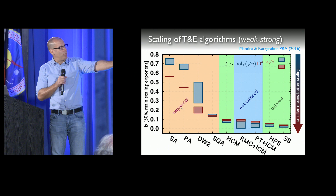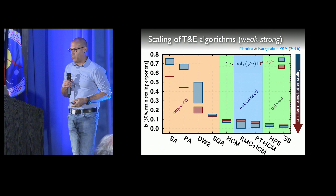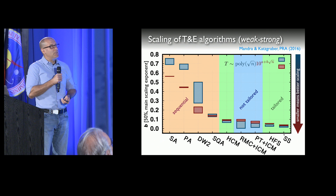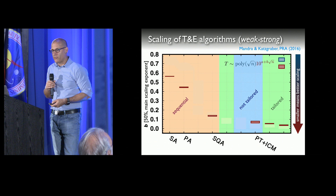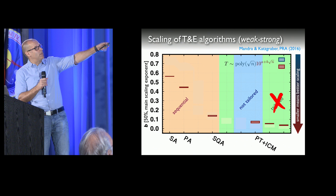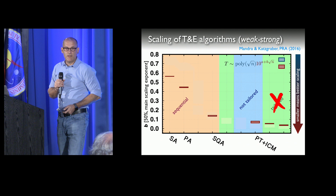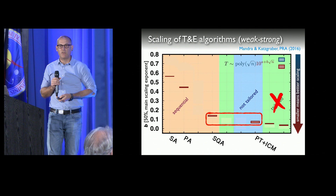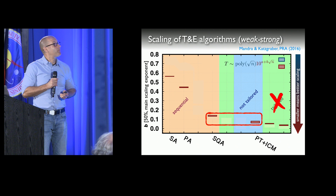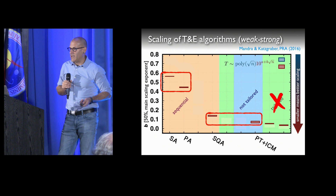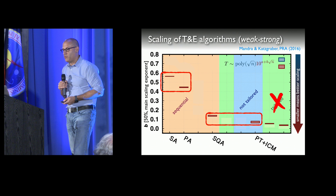Focusing on a handful of algorithms and ignoring the tailored ones, I want to compare simulated annealing to population annealing — SA versus PA — and simulated quantum annealing to parallel tempering. SQA and PT plus ICM are relatively close in scaling, which is good news. But if you compare simulated annealing and population annealing, you see that adding population resampling gives a noticeable performance boost. So the question is simply: can we add resampling to simulated quantum annealing and boost its performance?